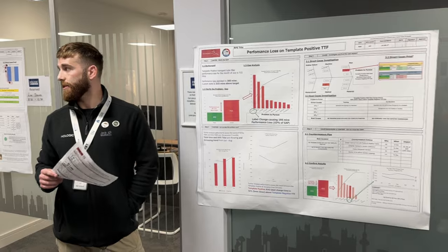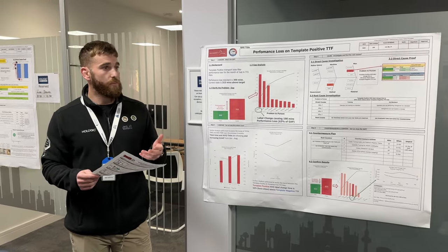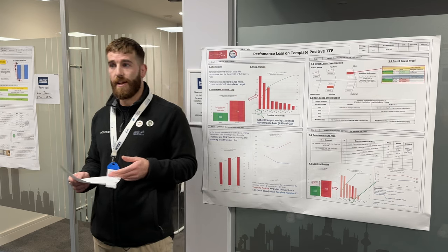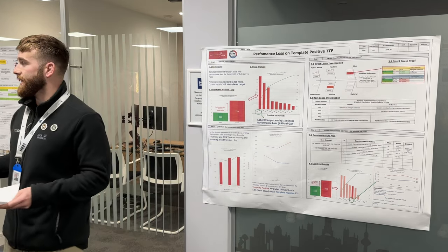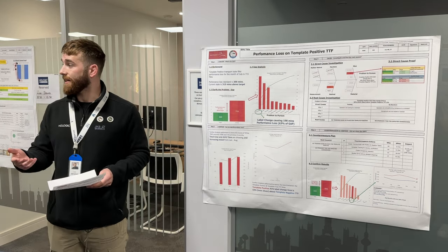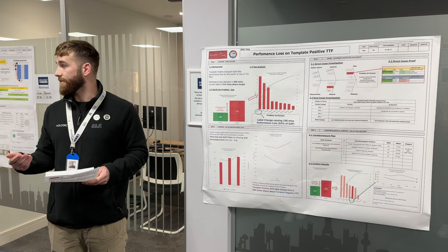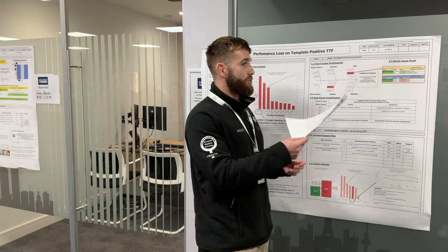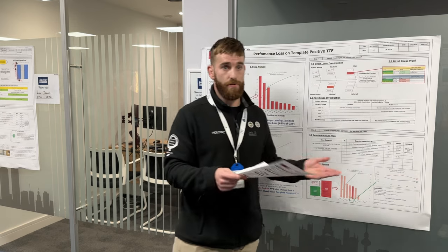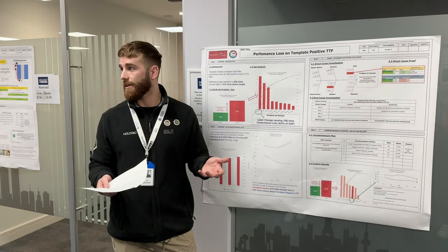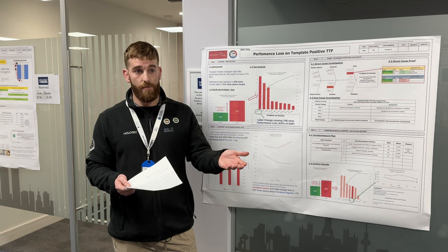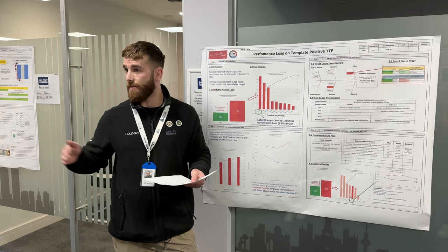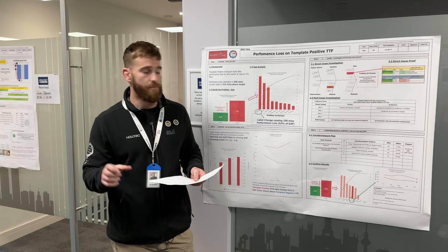We then looked at training, and this is where we were able to find evidence. George has been working on training guides for each of the different lines and areas. We found there was a training guide in place for the template negative line but not for the template positive line. I was able to directly prove that training was different between the two - one department was doing it to a standard and was trained, the other was varying how they did it because it wasn't trained the same way.